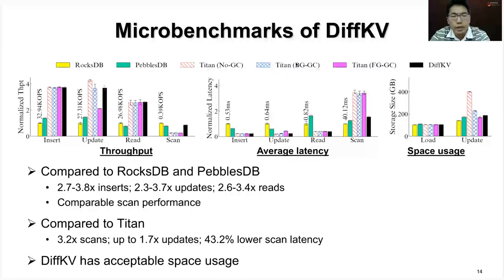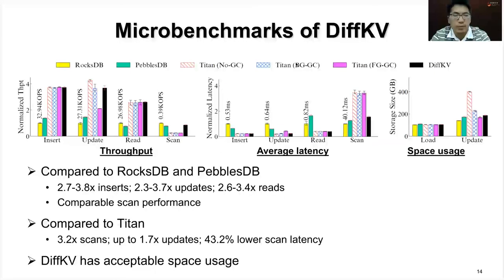Here are the results of micro-benchmarks. Compared to RocksDB and PebblesDB, DiffKV achieves up to 3.8x insert throughput, 3.7x update, 3.4x read, and comparable scan performance. Compared to Titan, DiffKV also achieves about 3.2x scan performance. For update-intensive workloads, DiffKV still has acceptable space usage.